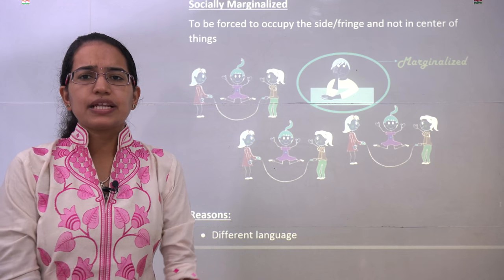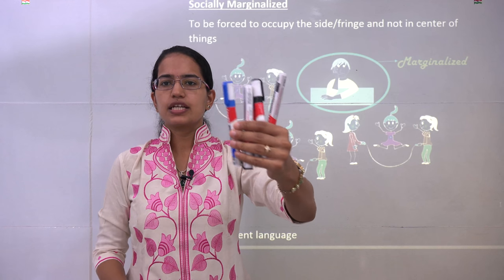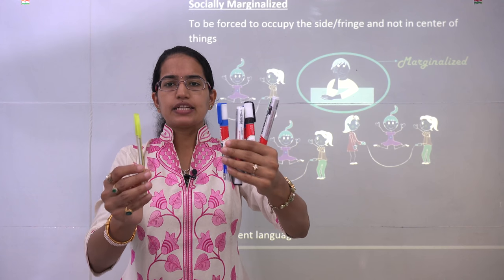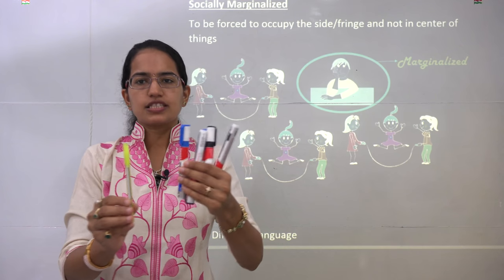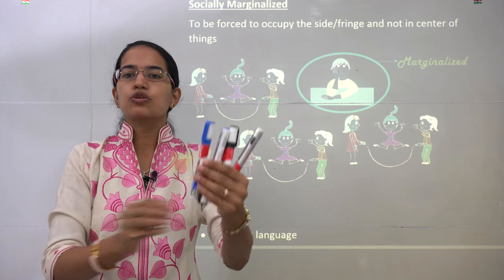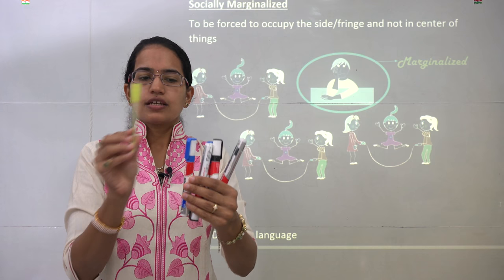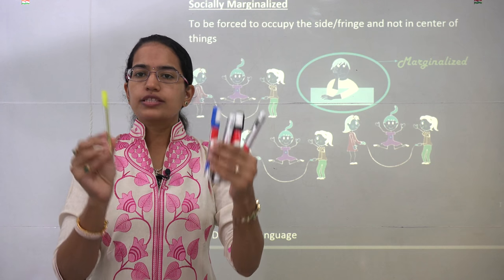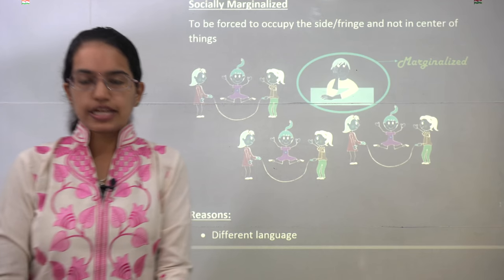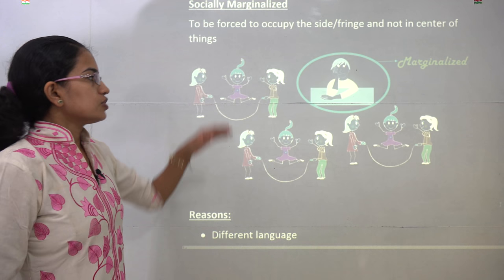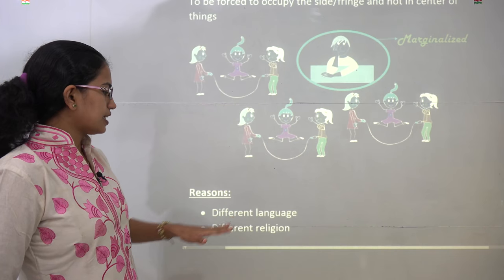With a simple example: if I have 5 markers here and one pen, the pen is essentially marginalized in the group of markers because the others are not similar to the pen, and there is no kind of common sharing that could be seen between the groups. That is the result of marginalization.